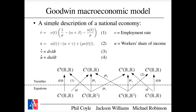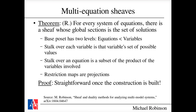The stalks for equations one and two are C¹ functions from R to R² (the u and v variables). Maps to individual variables are projections; maps labeled d/dt take derivatives with a loss of one degree of continuity; and maps implementing equations one and two compute u′ and v′ from u and v. A key theorem: the global sections of this sheaf are exactly the solutions of the differential equation.